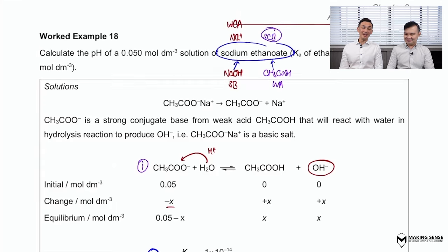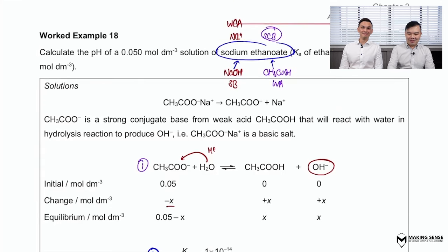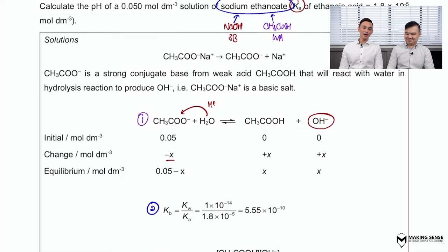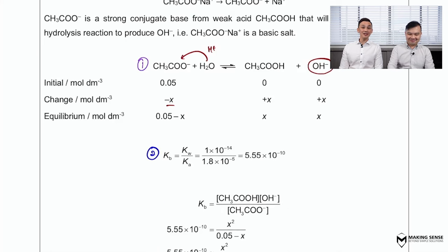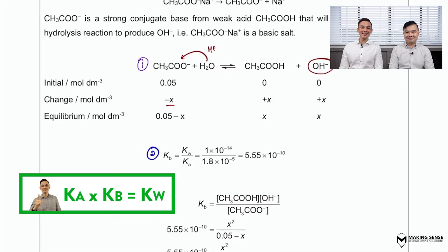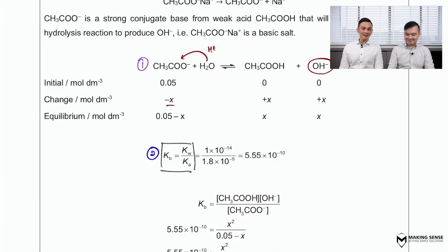A basic salt should require a Kb expression. But the question only gives a Ka value — what should we do instead? We have to find Kb by using the formula Ka × Kb = Kw, because these two are a conjugate acid-base pair. So we make Kb the subject of the formula, and by substituting in the values we can get the value for Kb.